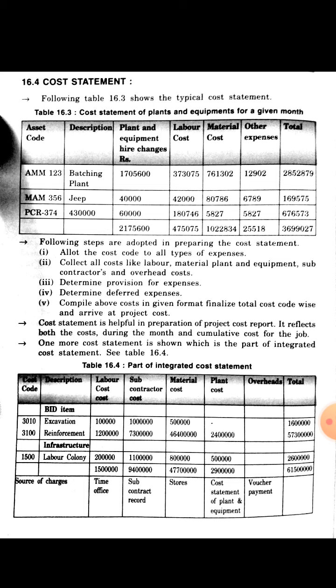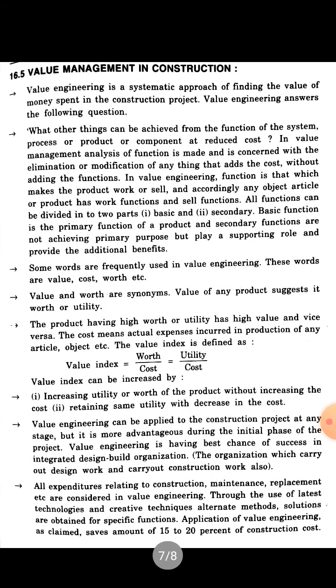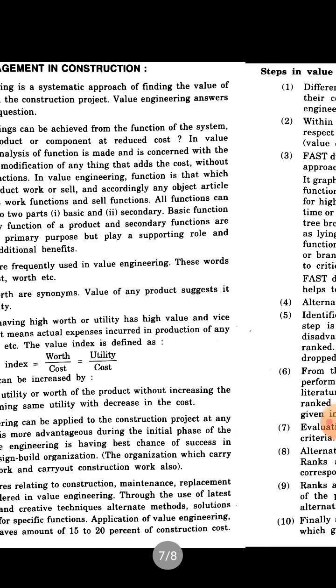The cost statement is helpful in preparing the project cost report. Another table shown is part of an integrated cost statement, which includes cost code, description, labor cost, subcontractor cost, material cost, plant and overhead charges, and total cost. The summation of all these cost components gives the total cost of the work.